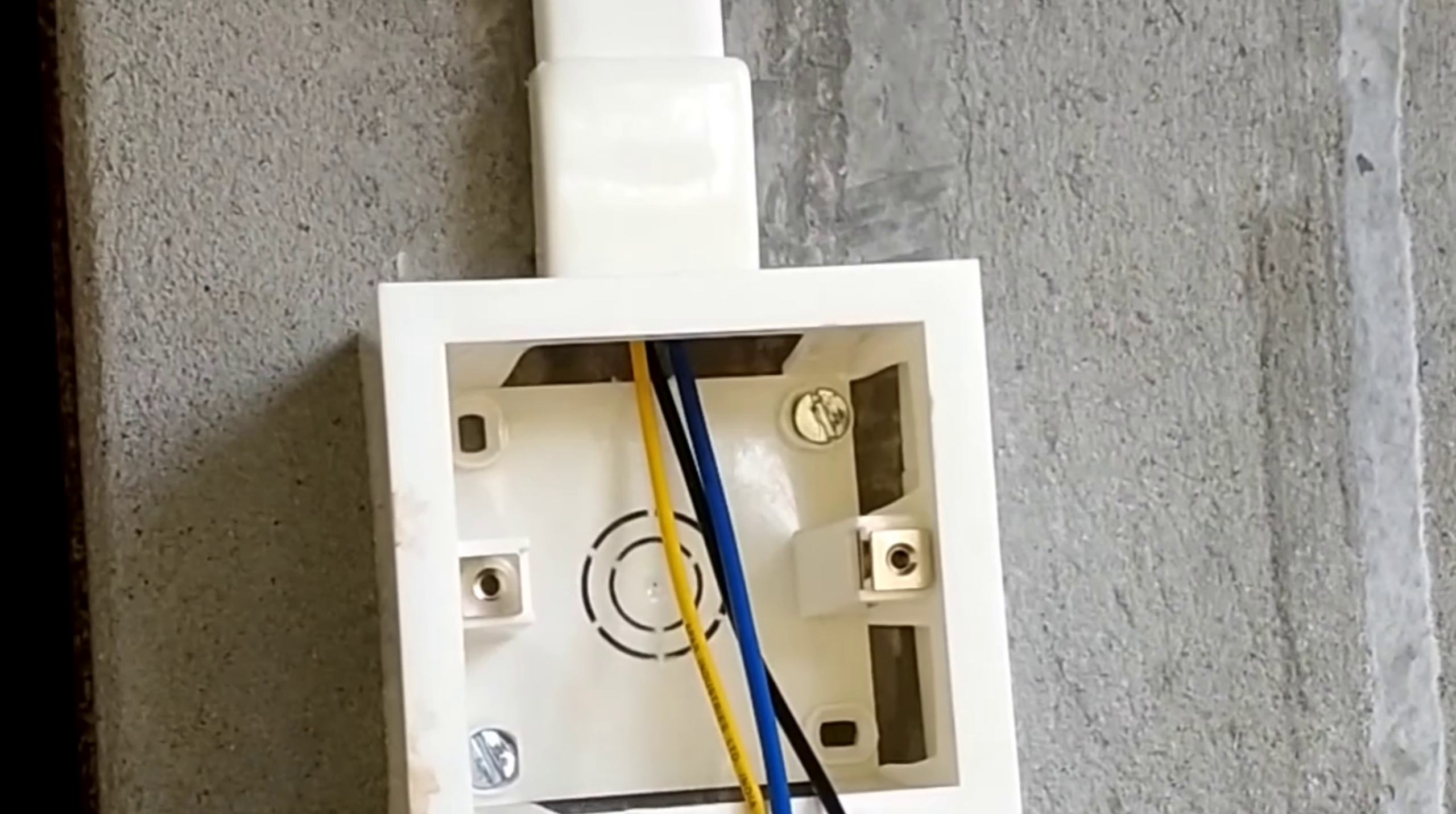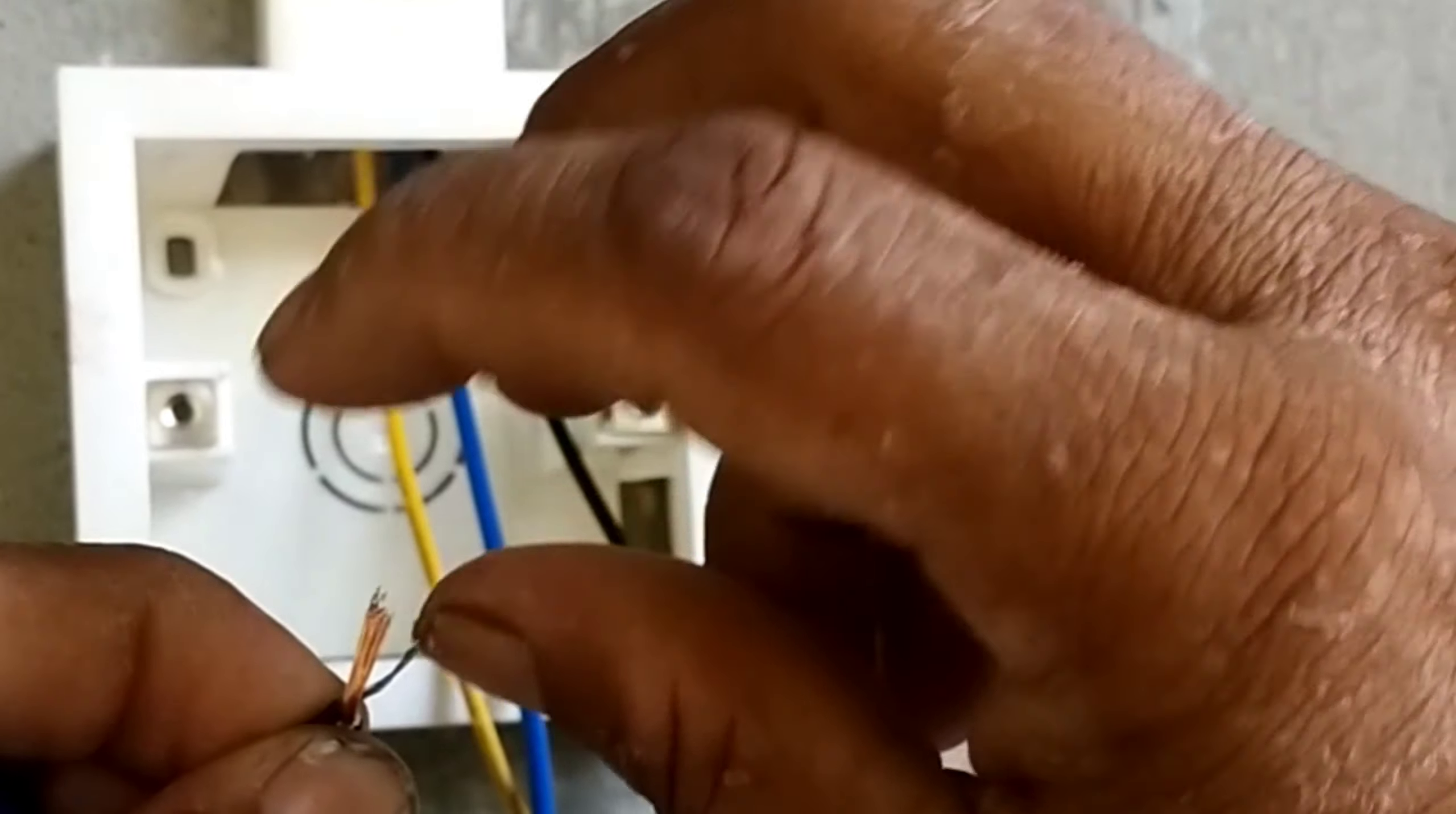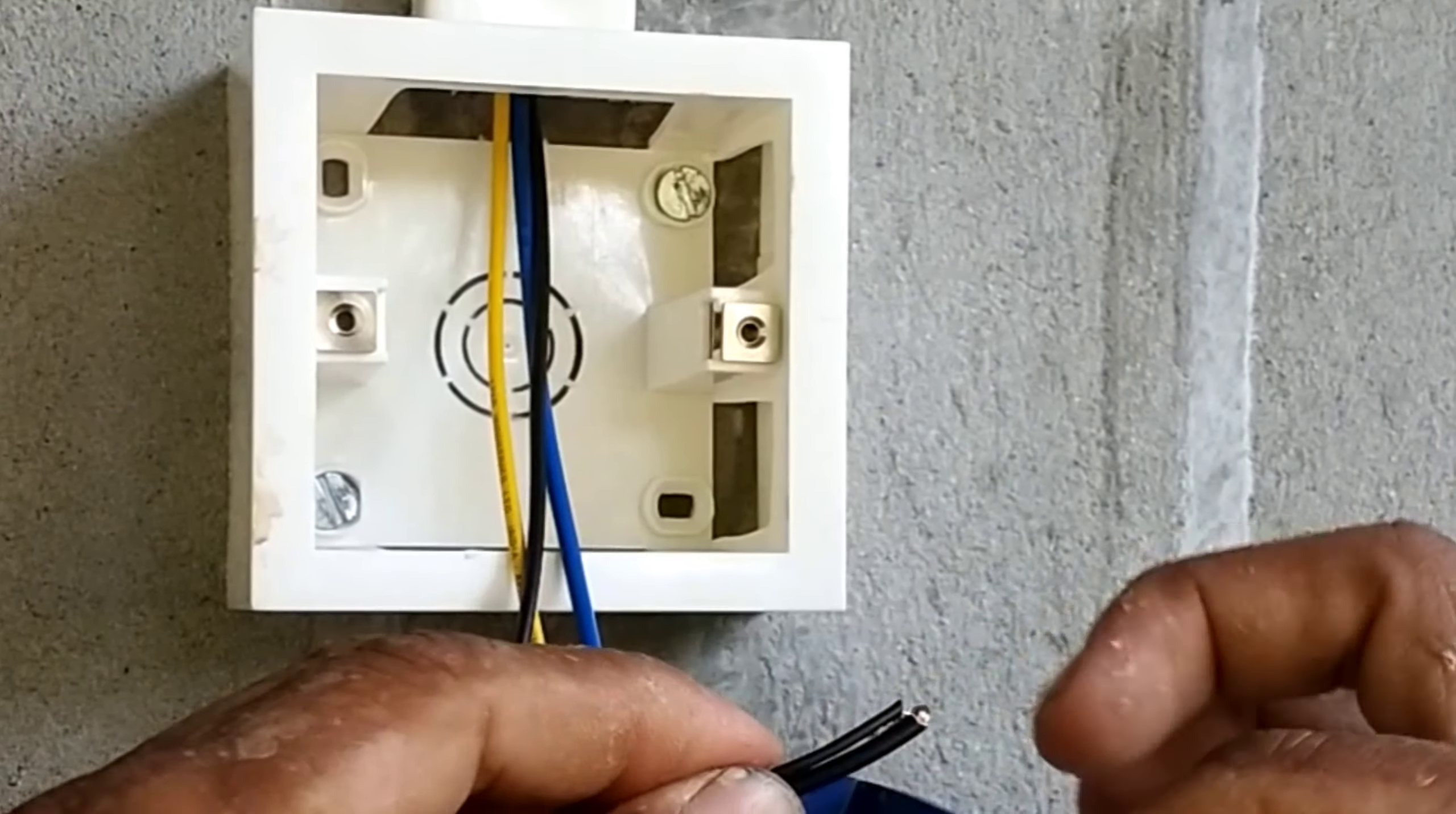We are looking at different wire colors. This is the neutral point for the wiring. I am using the port connection point. It is a neutral point.